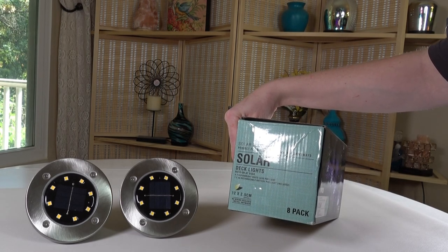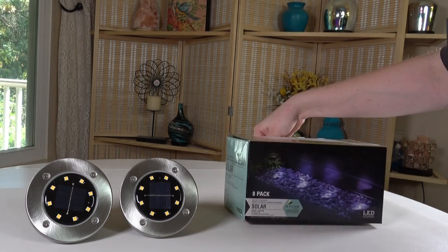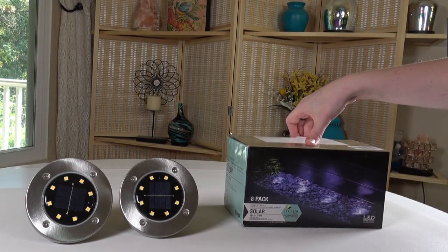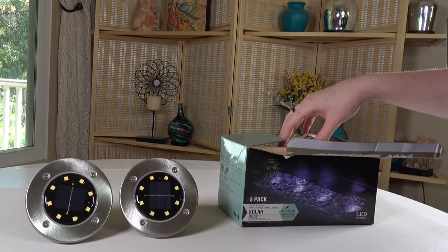And the box did come with eight LED solar disc lights and the plastic attachment tips that allow you to secure the lights. I'm going to show you what they look like before you put them together.